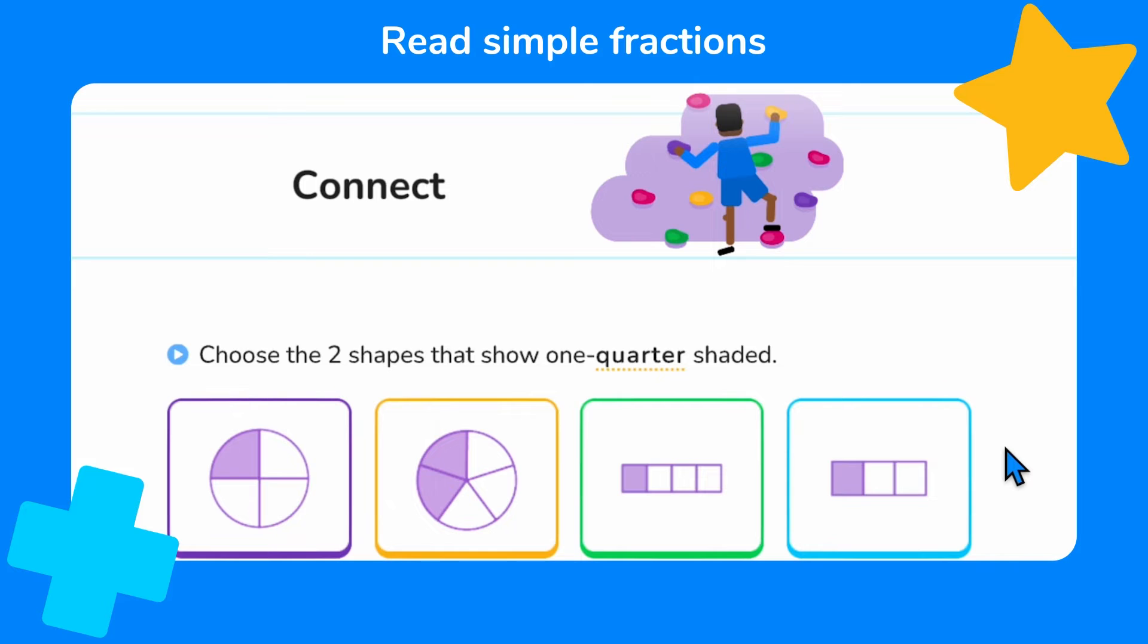One quarter means that one out of four equal parts have been shaded. We can see that this circle has been split into four equal parts and one part has been shaded, so we know that it shows one quarter.